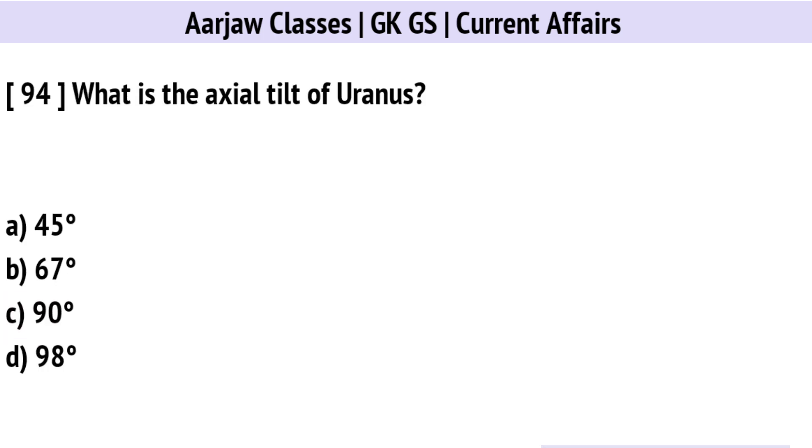What is the axial tilt of Uranus? Correct option is D: 98 degrees.